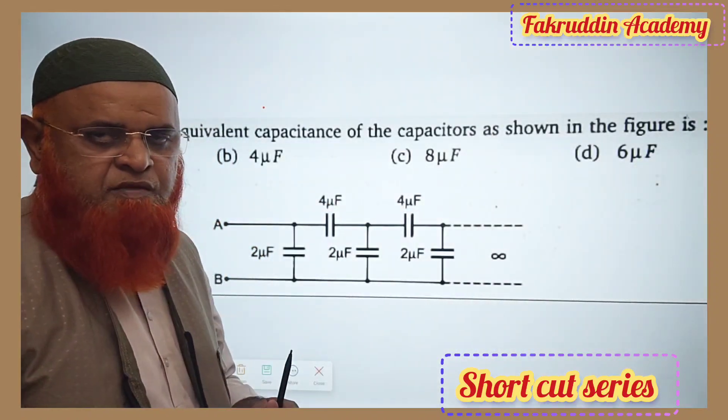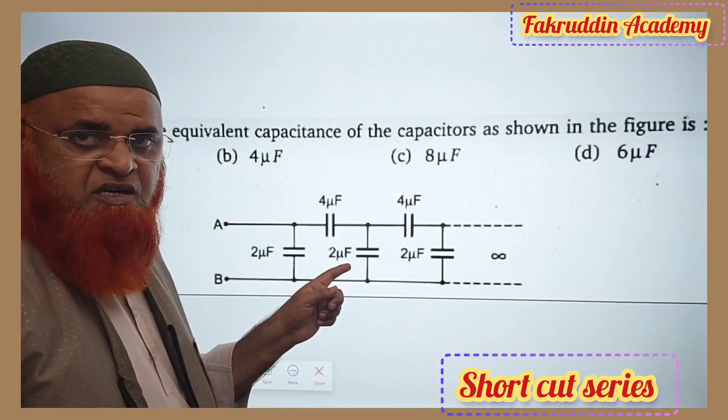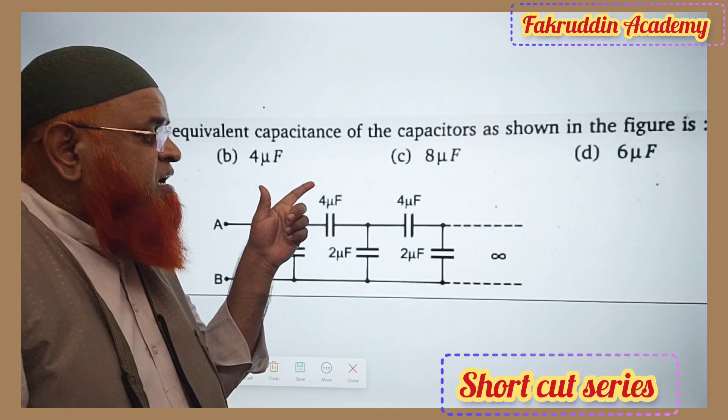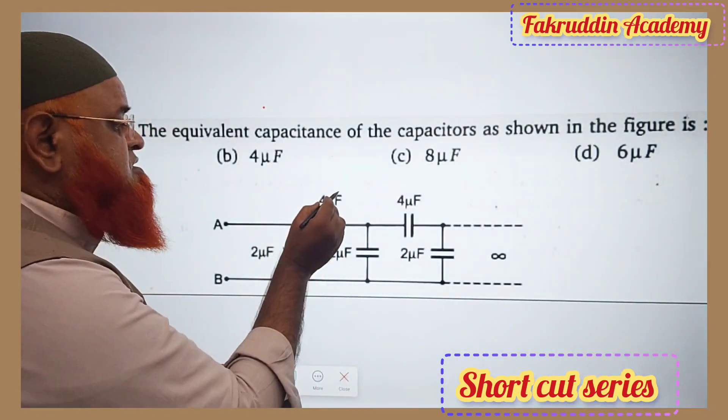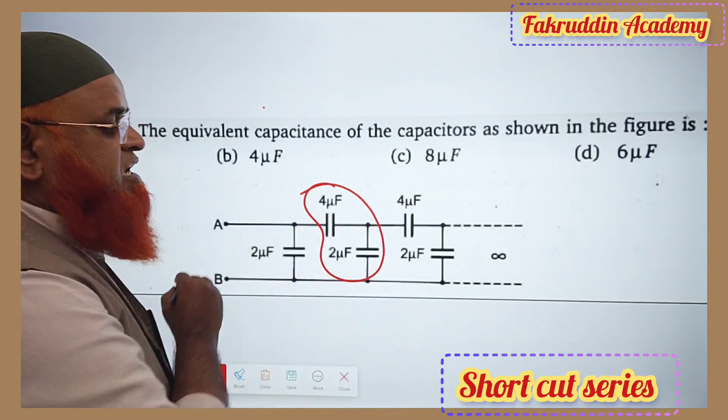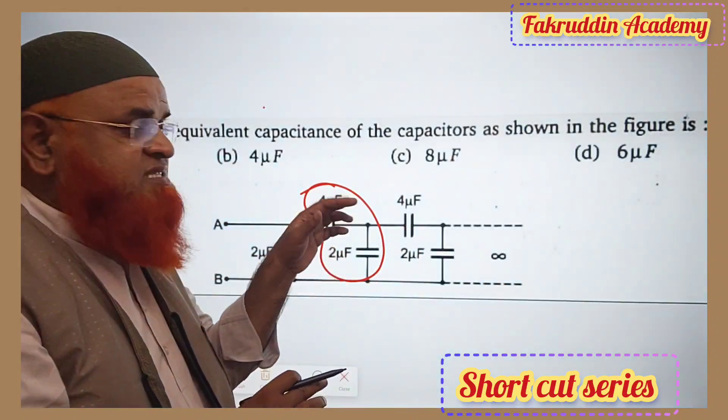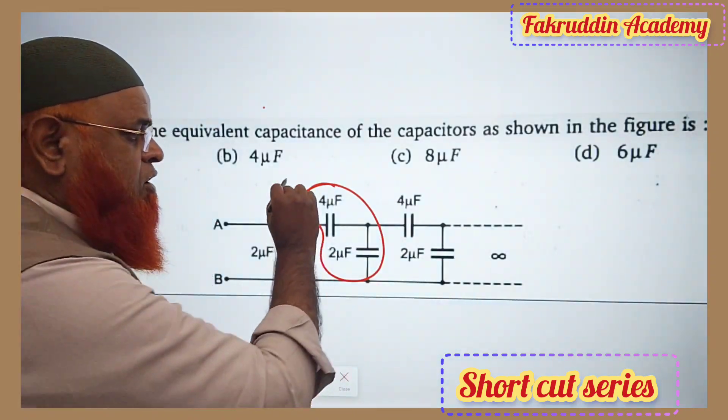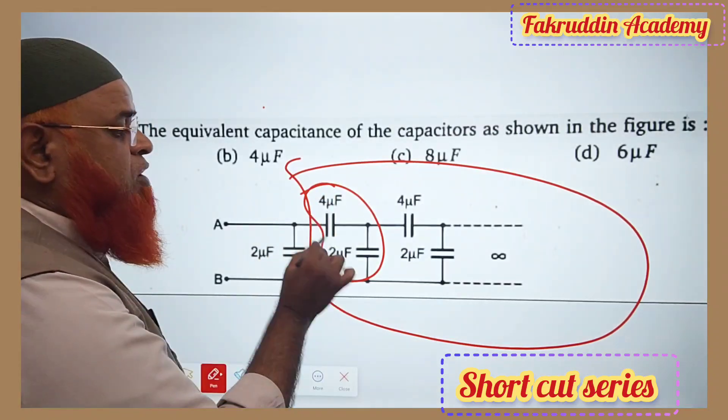The shortcut is whenever one capacitor is double to that of the other—that means this is 2 and the double of 2 is going to be 4—in such situations in both the cases, in an infinite series, if one is double to that of the other, the smaller one is going to be the answer for all these infinite series.